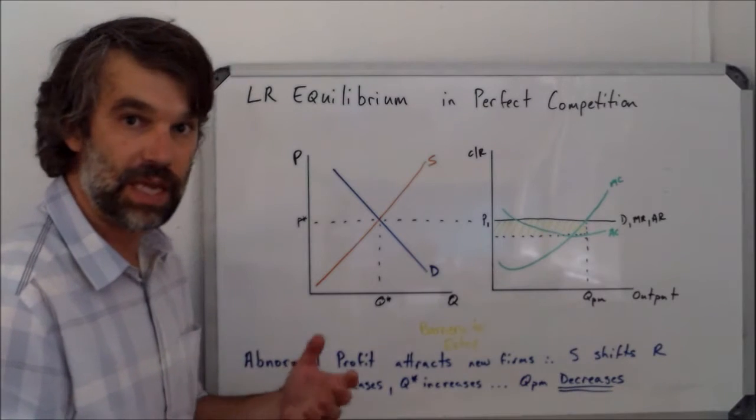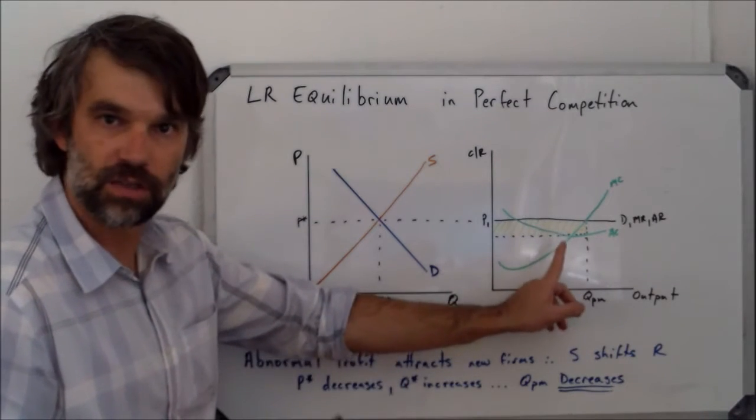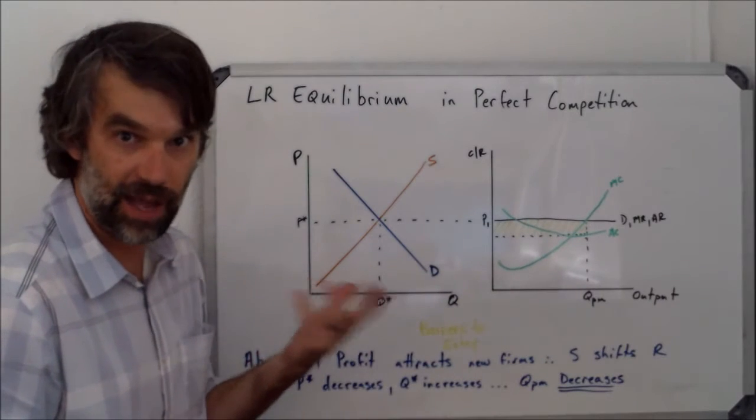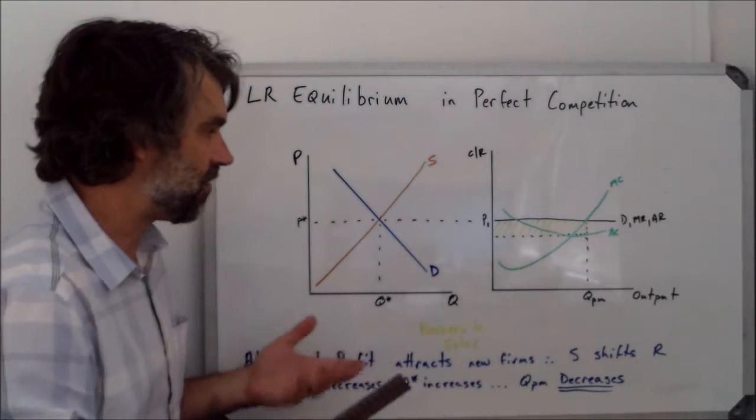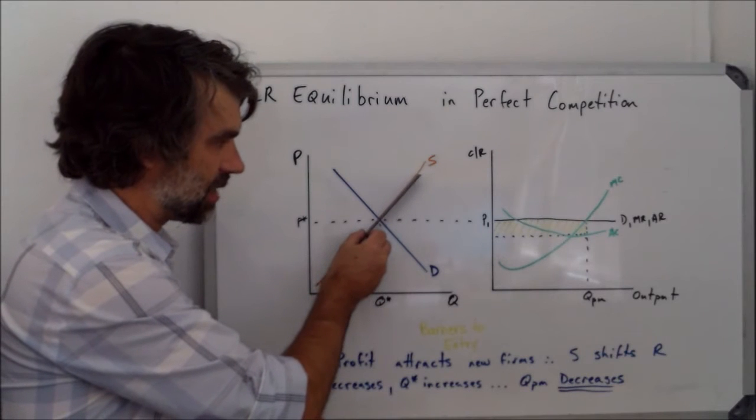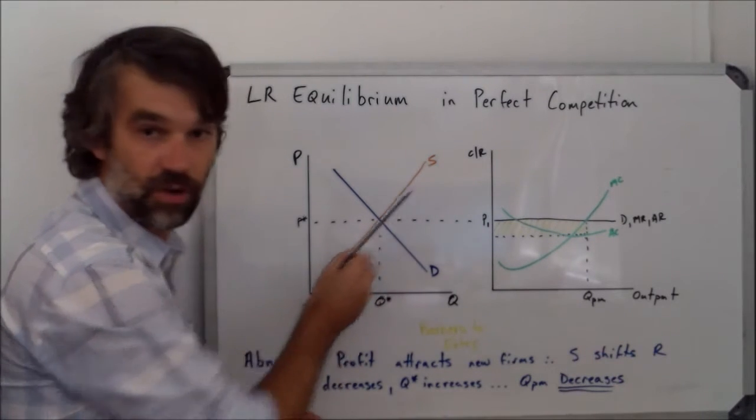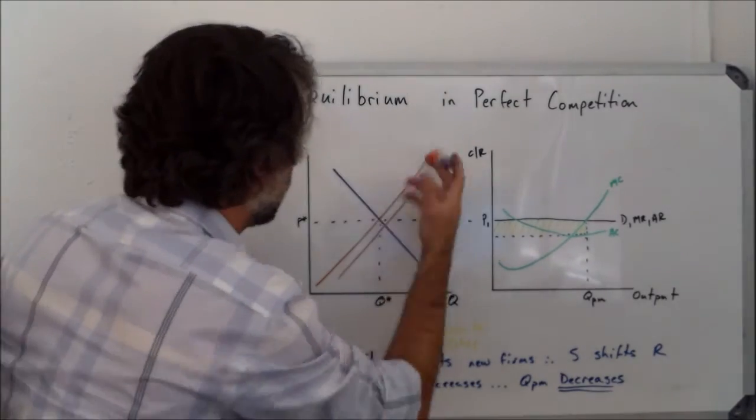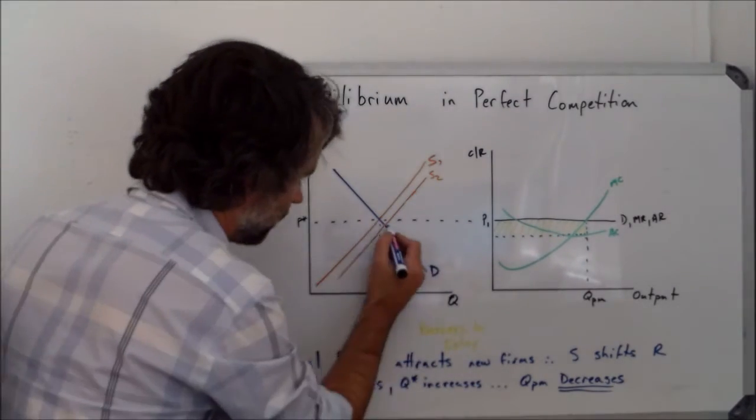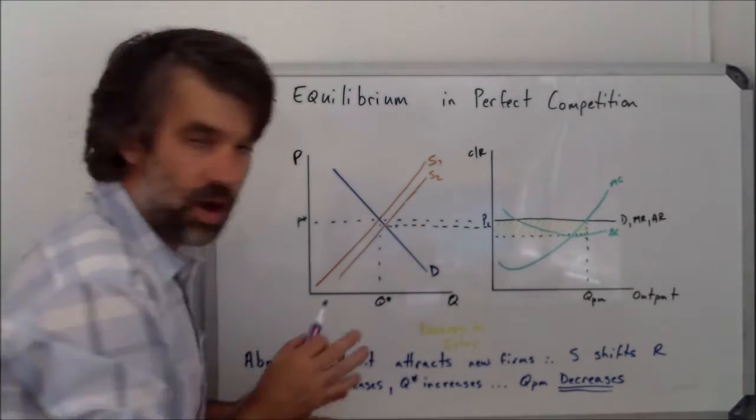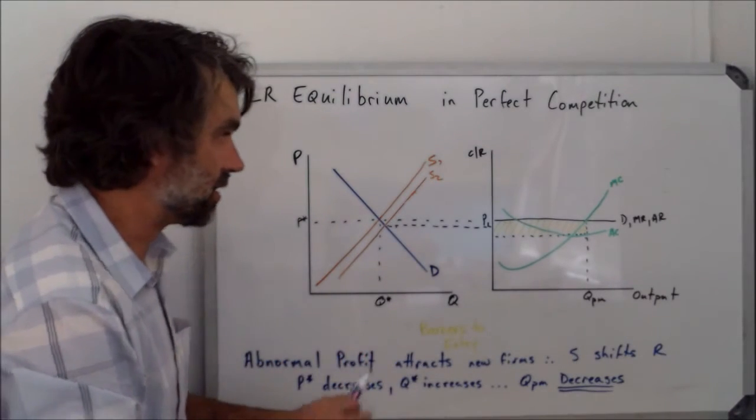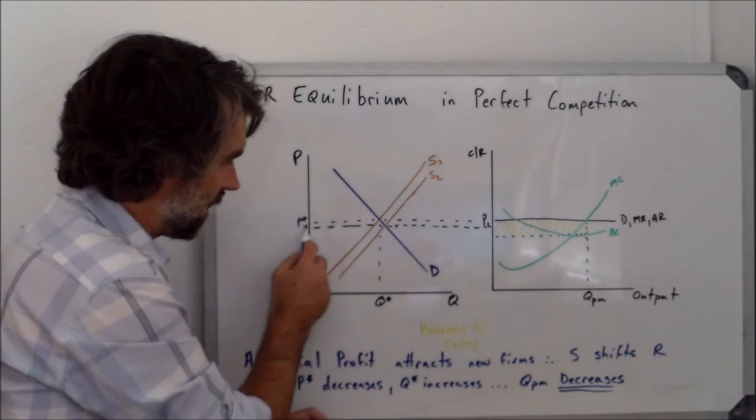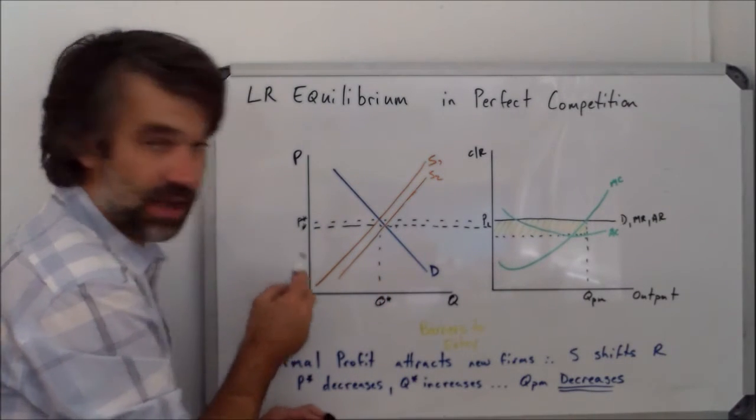So the effect of that will be if lots of new firms, remember, not one or two, but many people will be looking at this abnormal profit saying, I want me some of that. If that starts to happen, what we'll see is that supply is going to move further and further to the right. So the first thing we notice is that as supply moves to the right, what we see is that the price is going to fall.